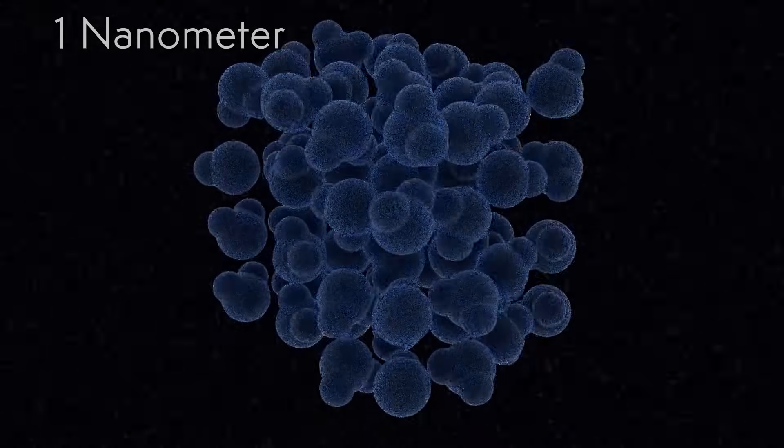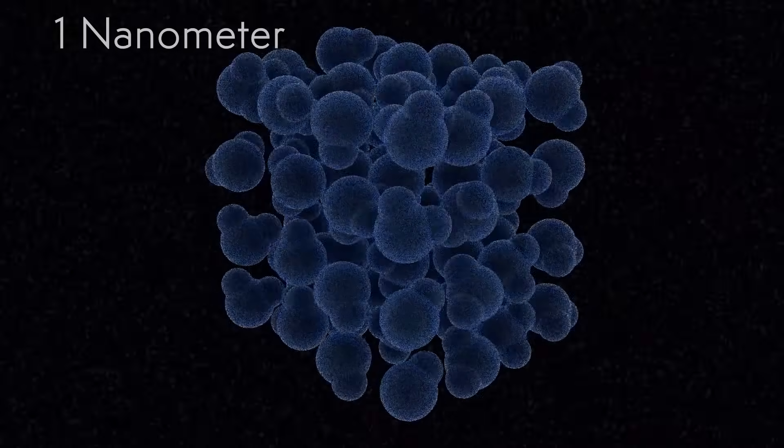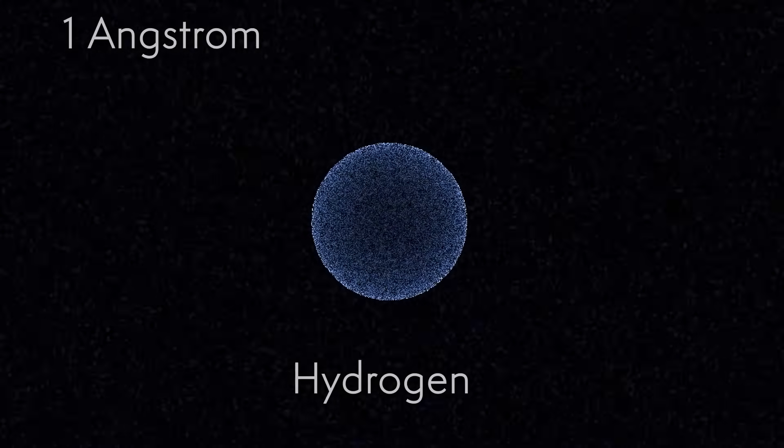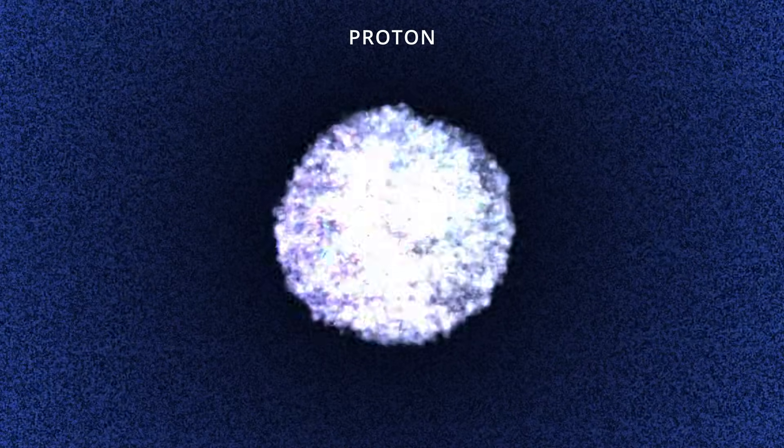When we reach the scale of one nanometer, we start to see the motion of the water molecules. Zoom in by a factor of 10, we reach the size of a hydrogen atom. Five more orders of magnitude in, we arrive at its nucleus, the proton.